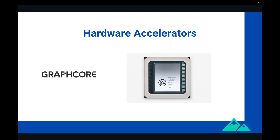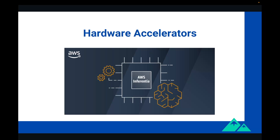Graphcore is a UK-based company making a specific AI hardware called IPU, equivalent to Google TPUs. You can both purchase IPUs or use them in the cloud through one of their partners. AWS built their own AI chips. They have a chip dedicated to inference called Inferentia, and another one dedicated to training called Trainium. These chips are relatively cheap. You cannot purchase such chips for yourself, but you can use them on AWS EC2 or SageMaker.